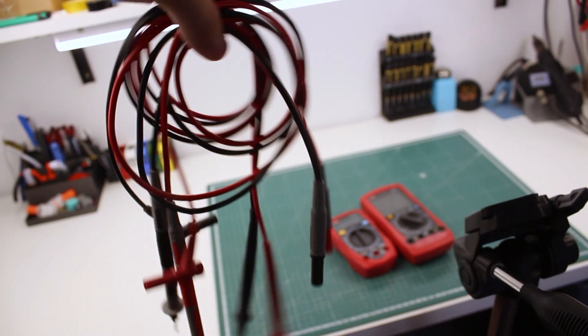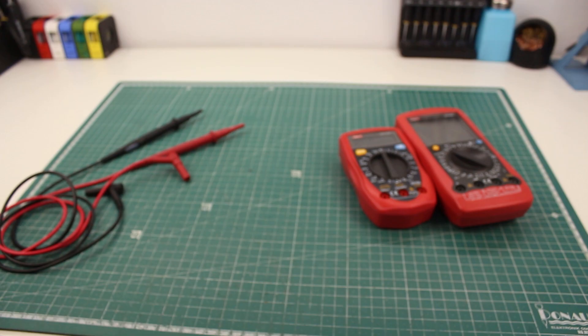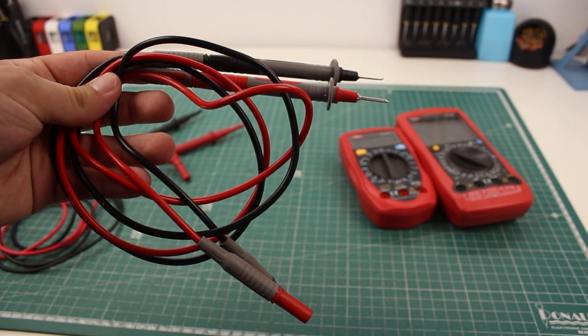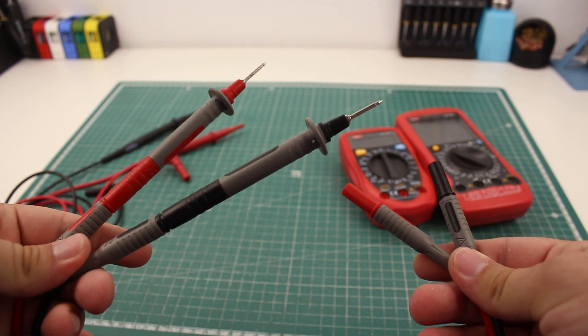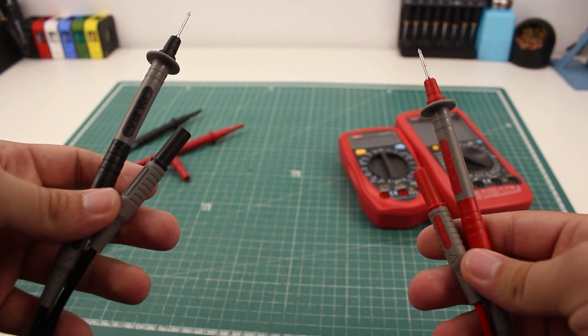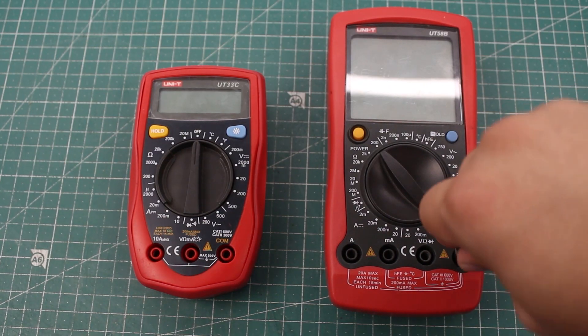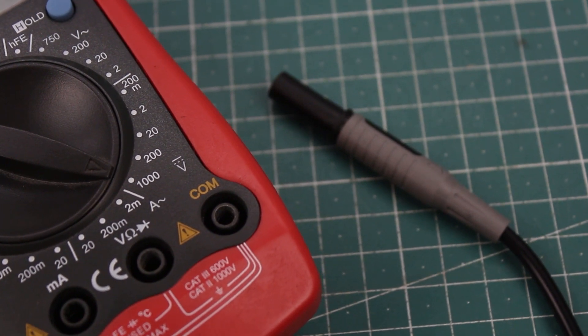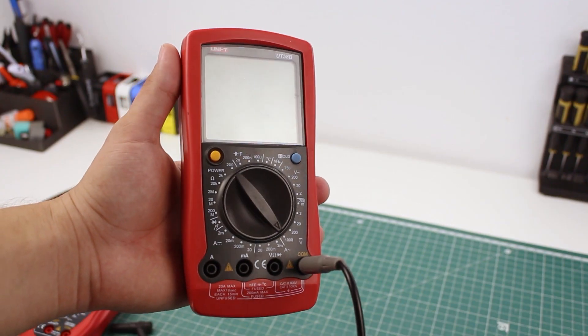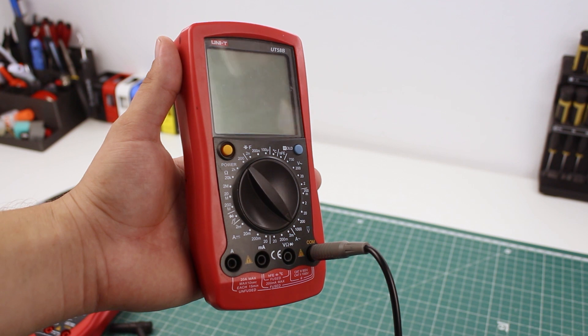The first thing you need to do before you start measuring is to connect the probes. One set of probes includes two leads: the black one and the red one. Black is negative and red is positive. First, connect the negative probe to the COM or common port of the multimeter. Once it's there, you don't have to worry about it again because the black lead always stays connected here.